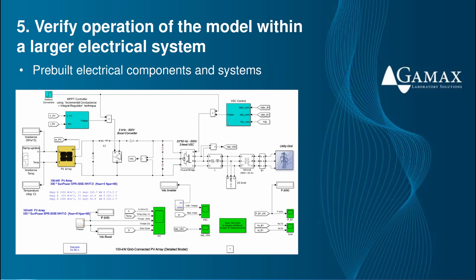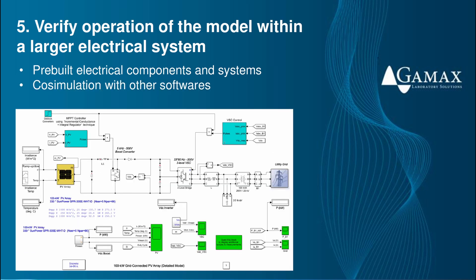Simulink helps us verify component and subsystem design as part of a larger electrical system in four ways. First, Simulink and Simscape Electrical include modifiable libraries of pre-built electrical components and systems such as electric machines, motor drives, grid equipment, and power sources and loads. The combination of basic electrical components with a range of fidelity from ideal to non-linear operation and the Simscape language for modeling physical components lets us build models that meet our project's specific requirements for simulation fidelity and speed. Second, Simulink supports co-simulation with other software including SPICE circuit simulators. We can develop the digital aspects of our controllers in Simulink and the analog circuit components in SPICE, and via co-simulation we can verify the controller in the context of non-linear circuit behavior such as parasitic capacitance or inductance in circuit elements.